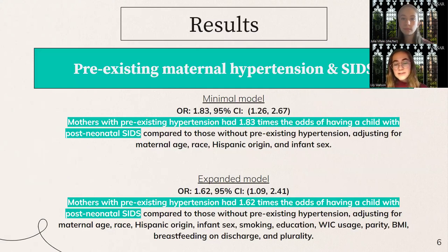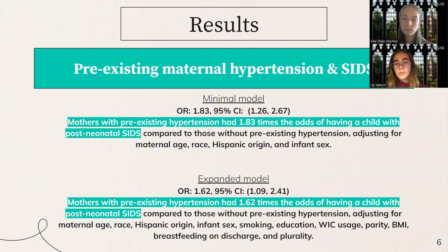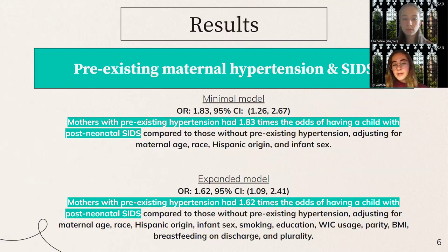We found a significant association between pre-existing maternal hypertension and SIDS. Specifically, our initial model found that mothers with pre-existing hypertension had 1.83 times the odds of having a child with post-neonatal SIDS compared to those without pre-existing hypertension. Our expanded model found that mothers with pre-existing hypertension had 1.62 times the odds of having a child with post-neonatal SIDS.